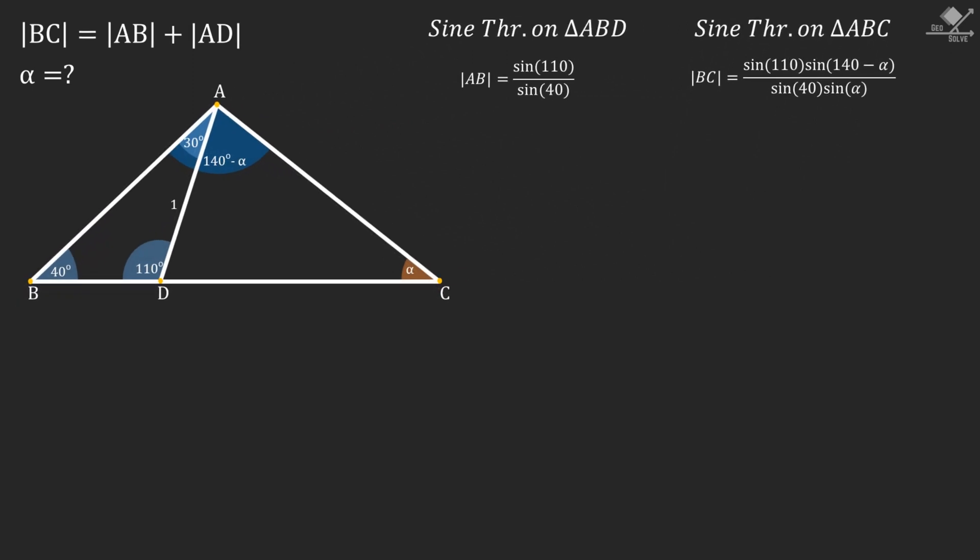Now we have two equations for AB and BC. And we know that BC equals AB plus AD. If we put the values in, we will have an equation like this. The right side of the equation can be written as follows.